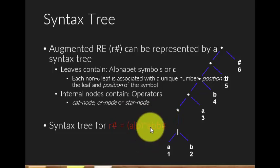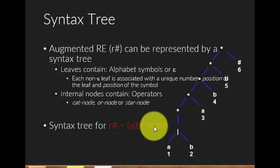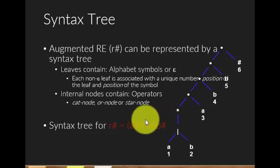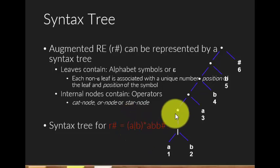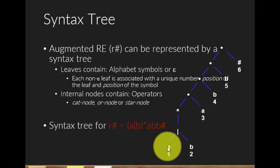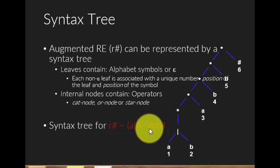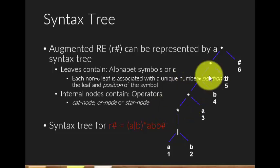A syntax tree does not have any specific rule, but the convention is to divide it from the middle. For example, from a star node, star will be at the top, and then you draw the left side — whatever is on the left of the star — and whatever is on the right accordingly. So on the left of the star you have A or B, connected with an OR node, and on the right it's all concatenation — A, B, B — so these are all cat nodes, and in the end you have a hashtag node.